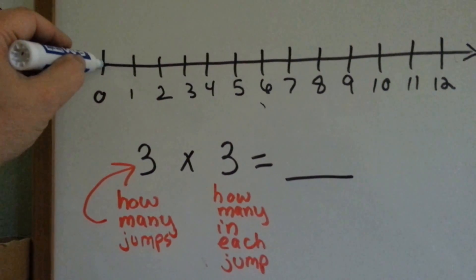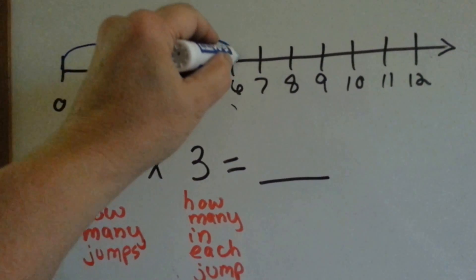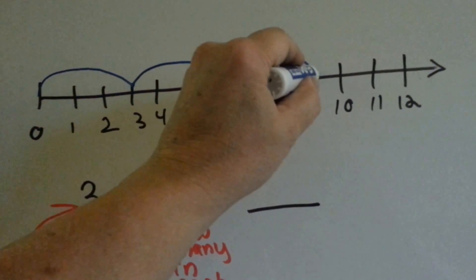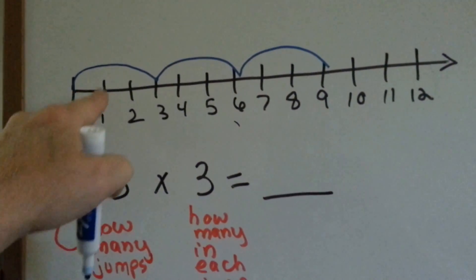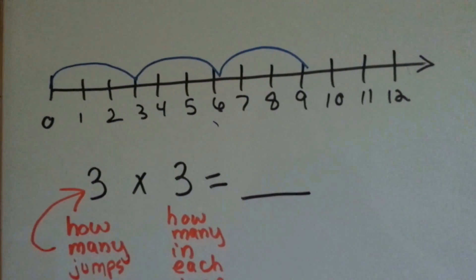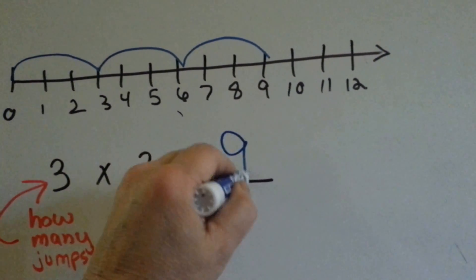So, if we're going to jump 1, 2, 3, 1, 2, 3, 1, 2, 3, here's our 3 jumps and 1, 2, 3 in each jump. 3 times 3 is 9. See that?